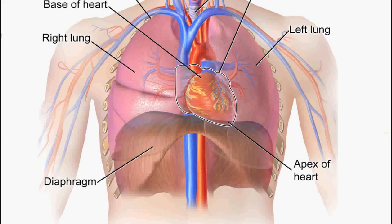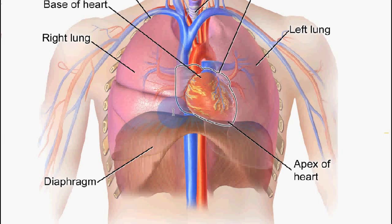When a person inspires or breathes in, the chest wall expands and the diaphragm moves downwards. Because of this, the intrapleural pressure becomes negative because the volume in this region increases, so the pressure decreases. Therefore the lungs, cardiac chambers, and thoracic vessels will also expand. When the cardiac chambers expand, it causes the pressure inside them to decrease, similar to how the intrapleural pressure decreased previously.